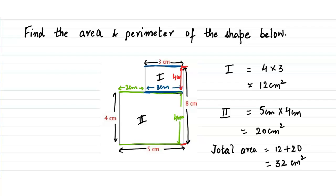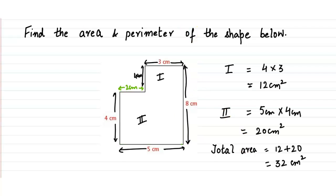Now all the sides are known, so we can figure out the perimeter of the shape as well. Let's clear this picture and again write down all the sides. I have now written all the outside boundary lengths clearly.